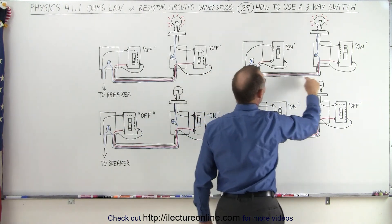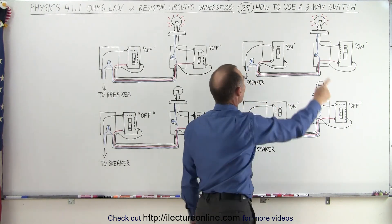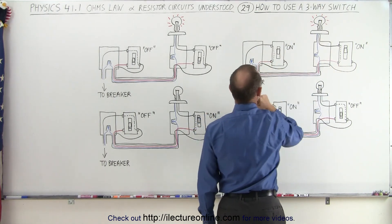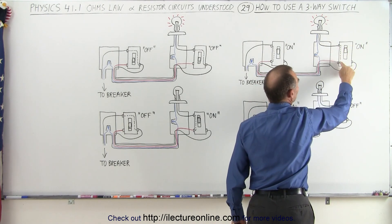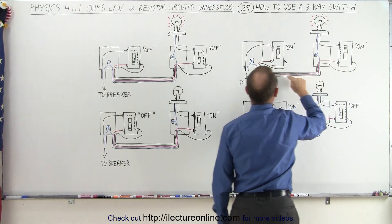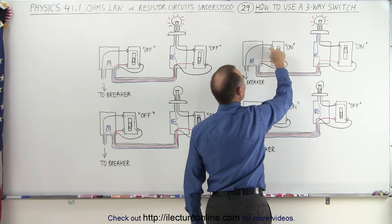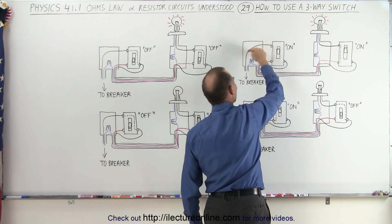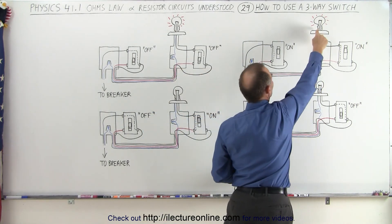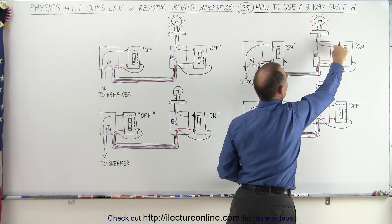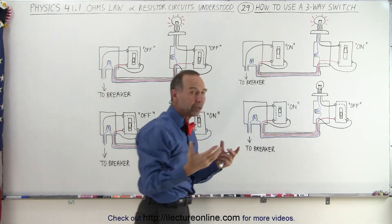We have one continuous path on the blue wire to the light bulb. To have it on, you need another continuous path going back from the light bulb to the breaker switch. From the light bulb, if this switch is in the on position, it makes a connection to the red wire at the bottom left. If the other switch is also in the on position, it connects through to the breaker switch. So you have a continuous path from the breaker on the blue wire to the light bulb, and back on the black and red wires to the breaker switch. That's why the light bulb is on.